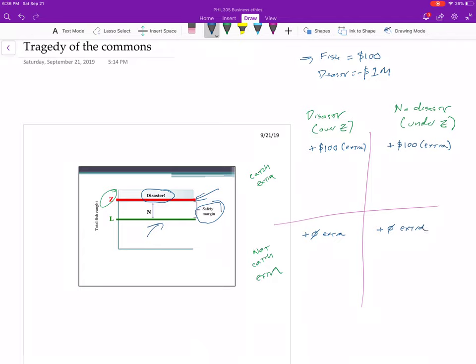Now we need to fill in the disaster. The disaster is in this column. So here, we lose a million. And here, we lose a million.